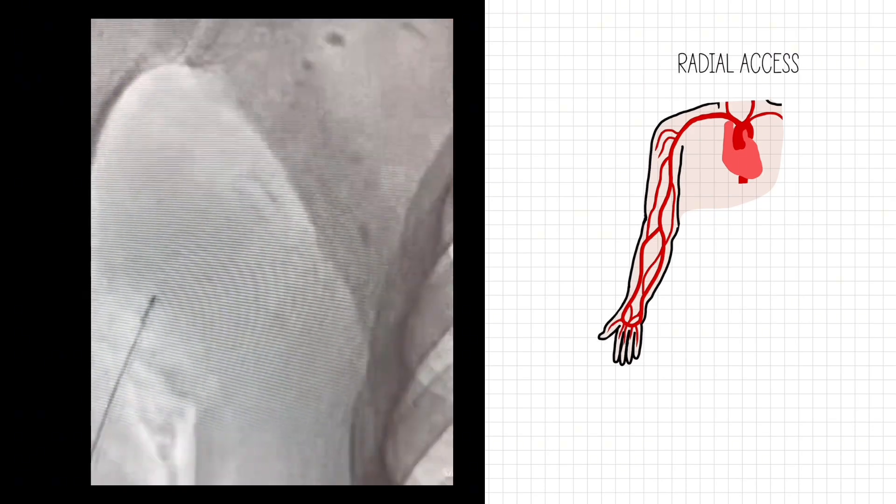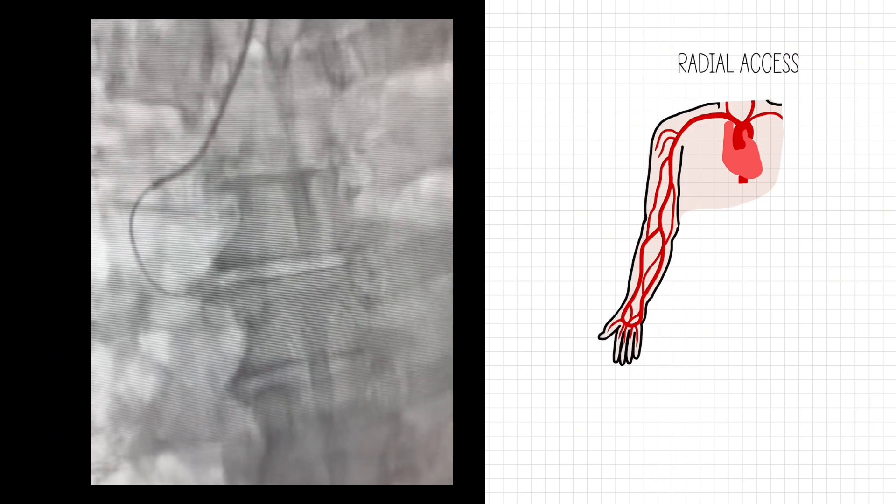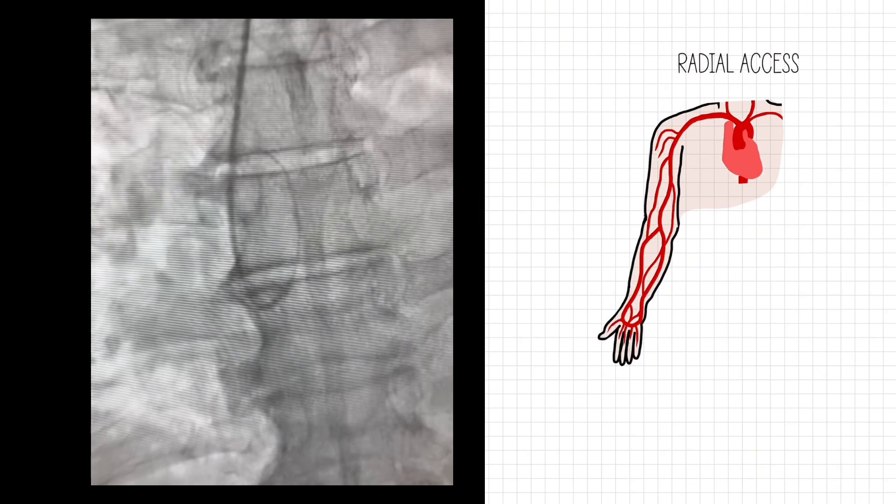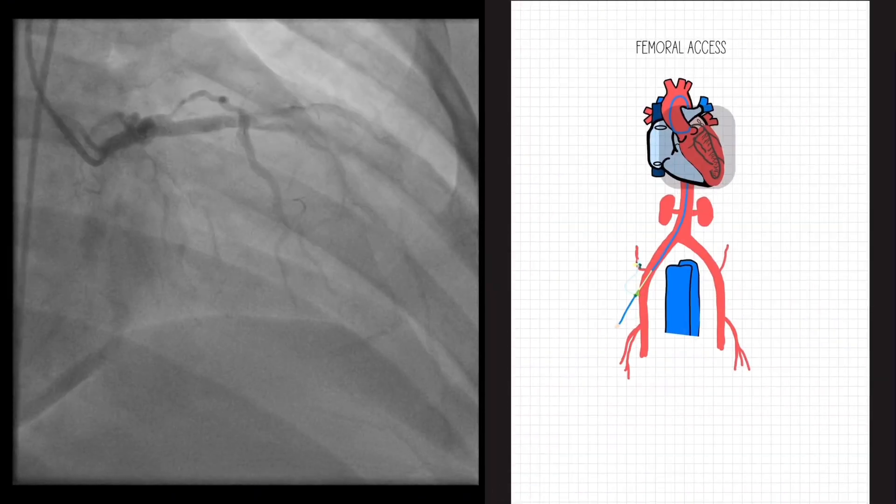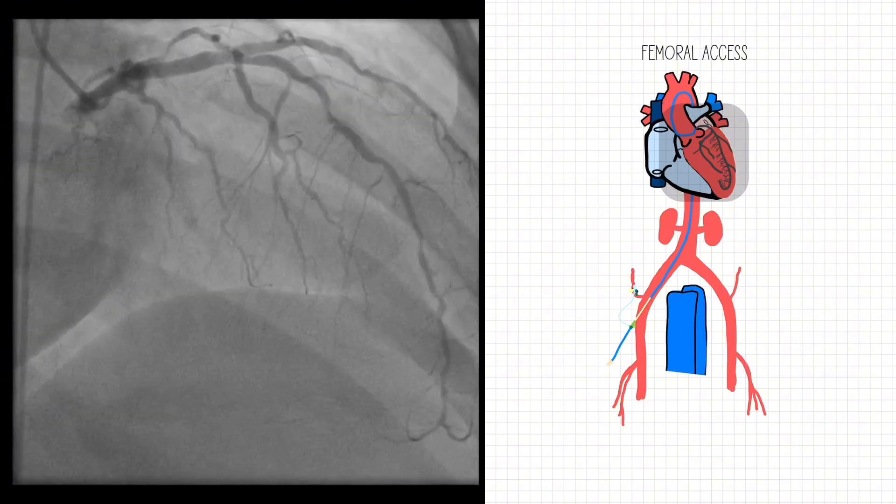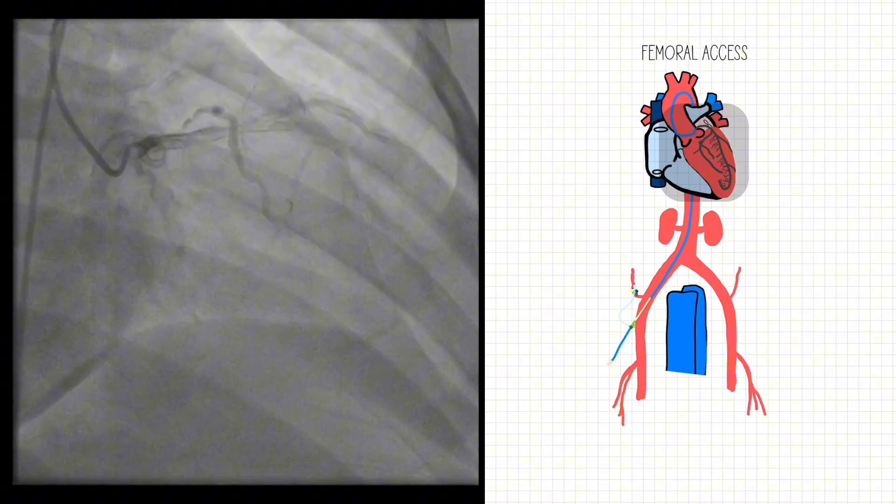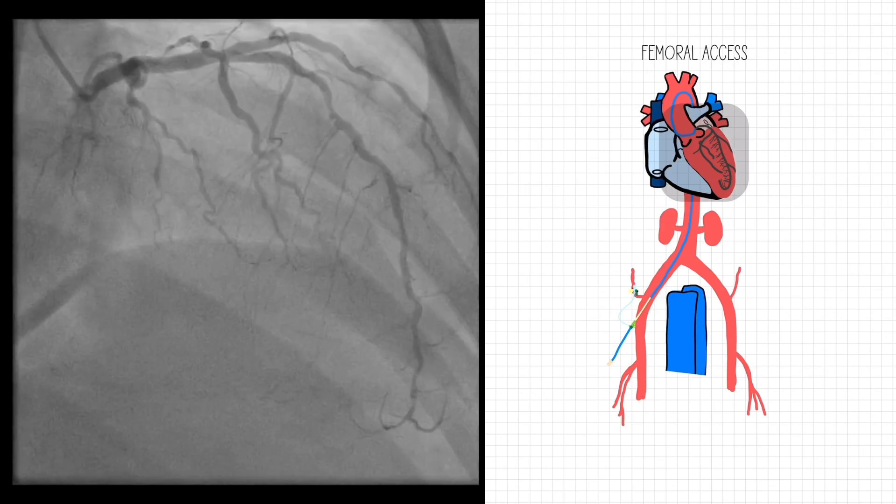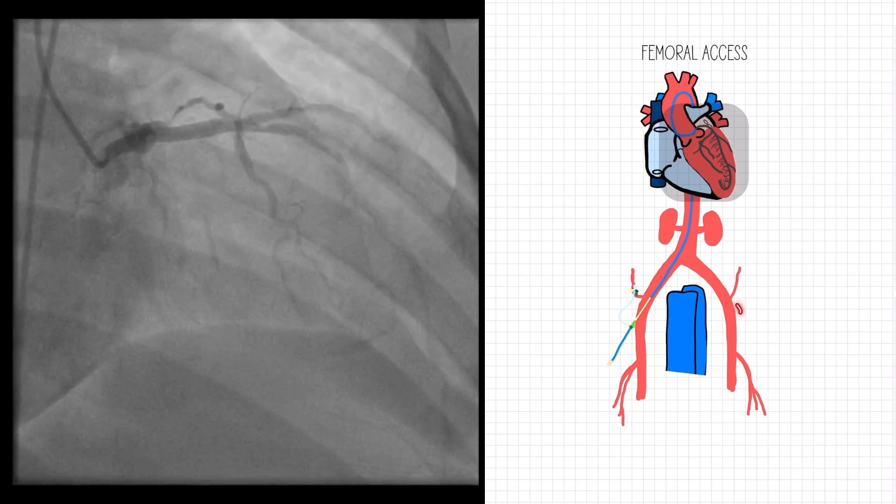This is important to pay attention for radial access, and this could be both a right or a left radial access. The next one, not as common anymore but definitely is for more complex procedures where we need larger access because the radial is so much smaller than the femoral artery, is femoral access.